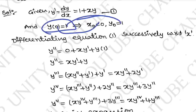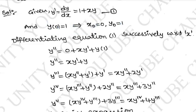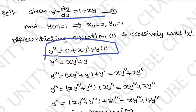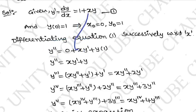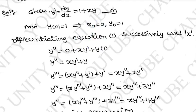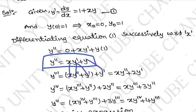We need to find y(0.1) to 4 decimal places. y(0) = 1, so x0 = 0 and y0 = 1. Differentiating equation 1: y'' = xy' + y, using the product rule — u·v' + v·u' — means x·y' + y·1. So y'' = xy' + y.